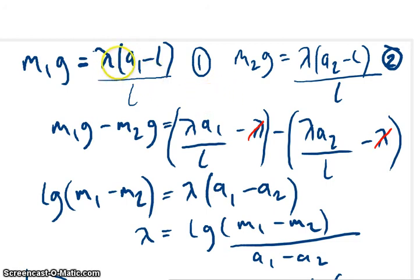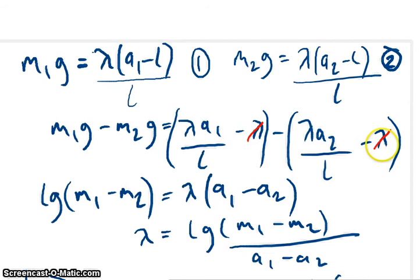So, taking away the two equations from each other. If you expand this, you get lambda A1 minus lambda L, all over L. Lambda A2 minus lambda L, all over L. So, the lambda L divided by L is just a lambda term. And the same here. So, subtracting them, I get these.